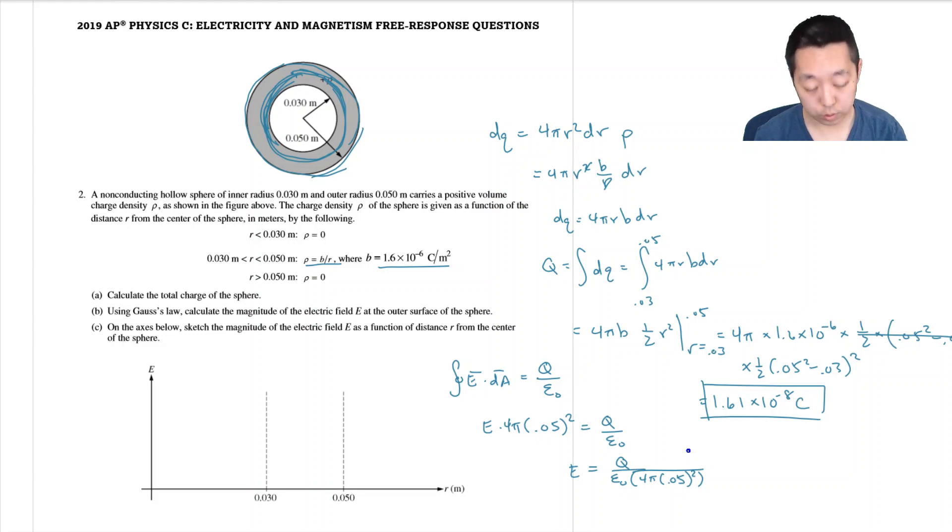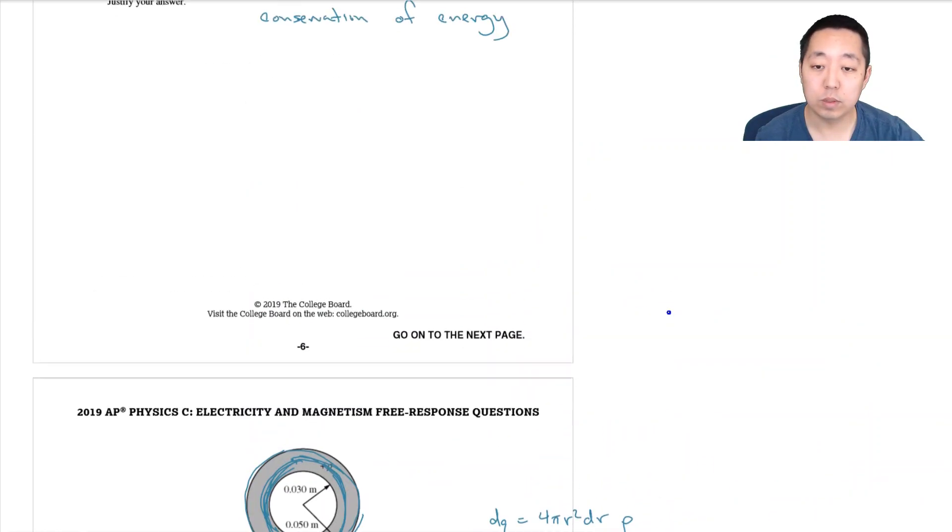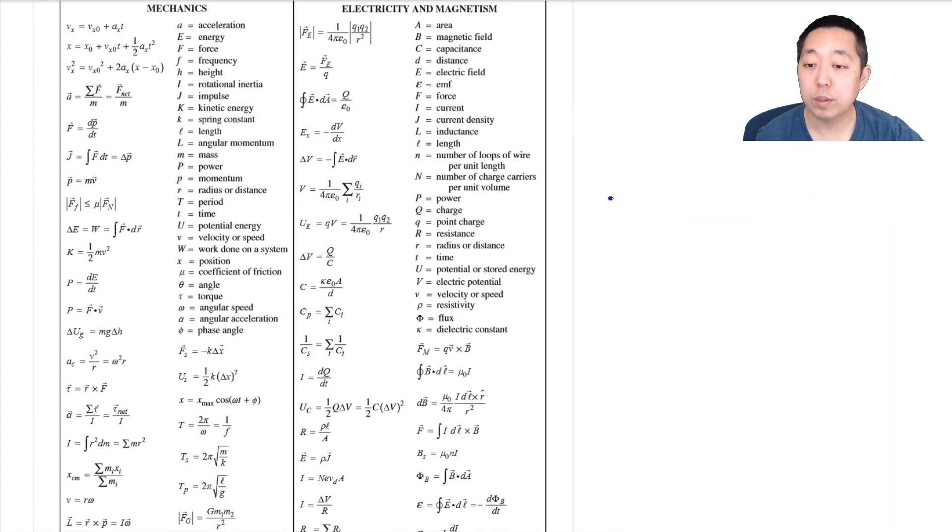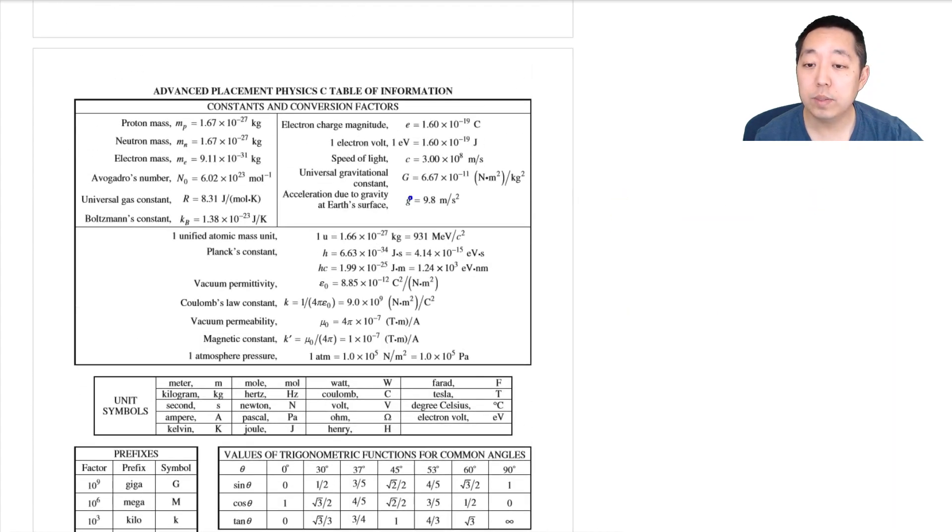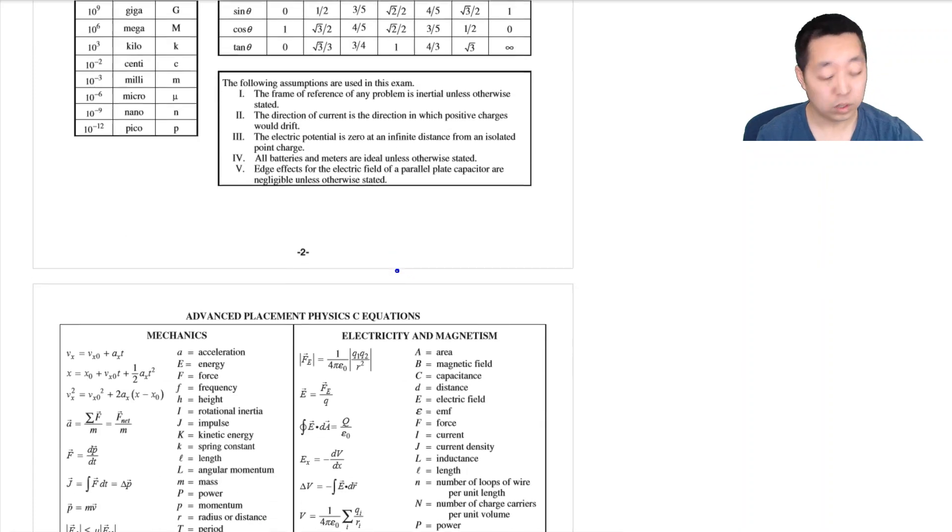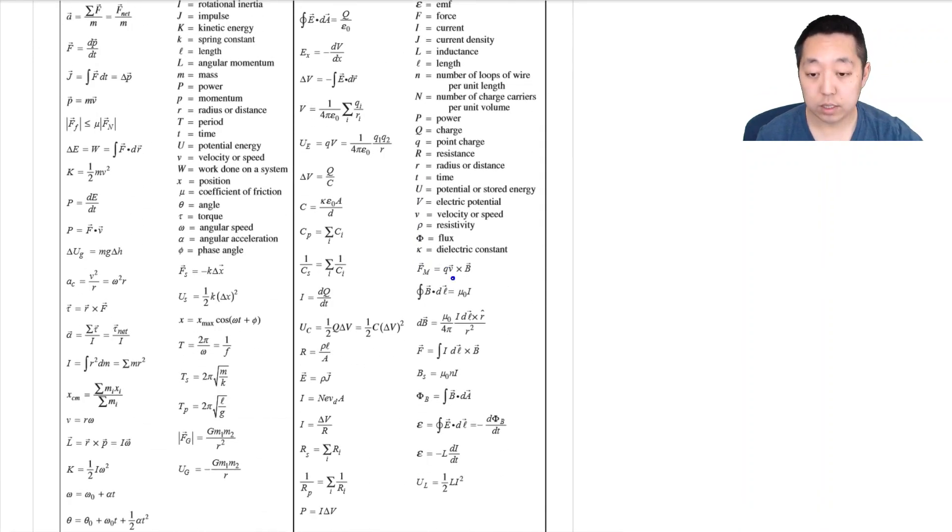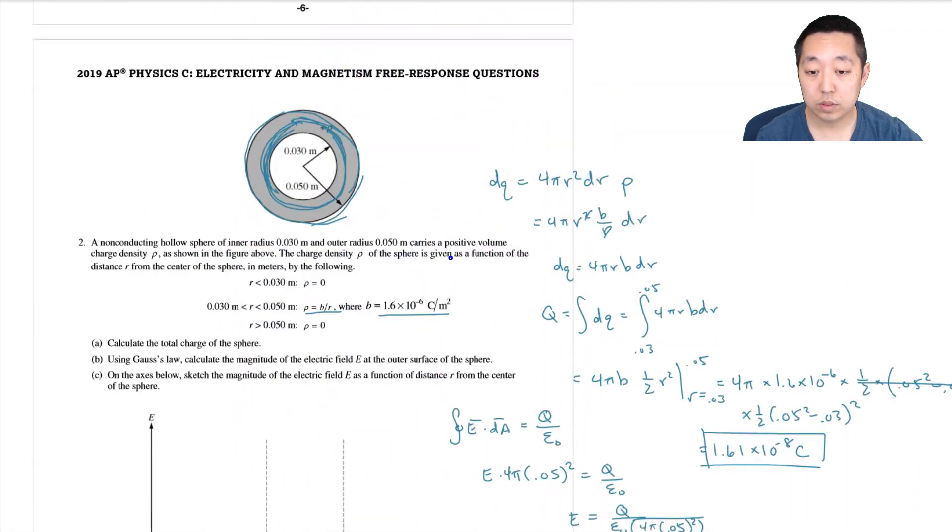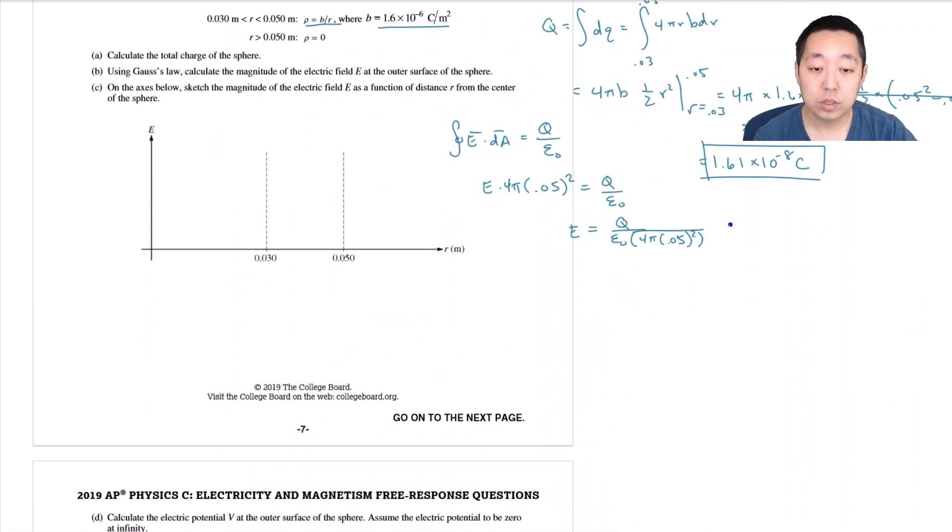So I just plug in Q for here and I plug in epsilon naught for there. So 1.61 E minus 8 divided by 4 divided by pi divided by 0.05 squared divided by, oh, what's epsilon naught? If I didn't know, I have to scroll all the way up. Epsilon naught, 8.85 E minus 12. And I got 5.79 times 10 to the 12. Sorry.